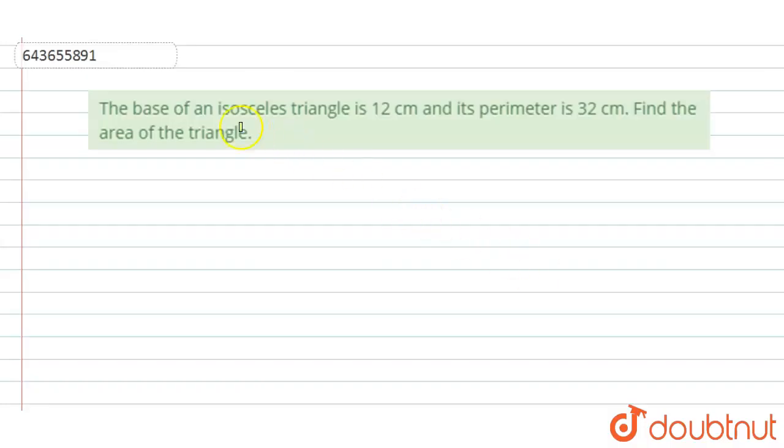Hi, welcome to this video. The question is: the base of an isosceles triangle is 12 centimeter and its perimeter is 32 centimeter. Find the area of the triangle.